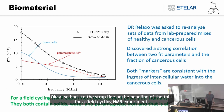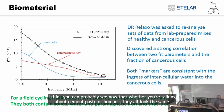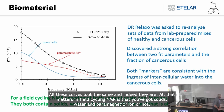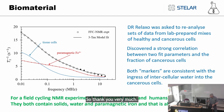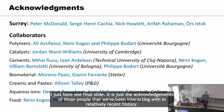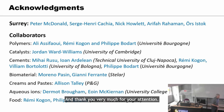Back to the headline of the talk. For a field cycling NMR experiment, you can probably see now that whether you're talking about cement paste or humans, they all look the same — all these curves look the same, and indeed they are. All that matters in field cycling NMR is that you've got solids, water, and paramagnetic iron or not. Thank you very much. Just one final slide with acknowledgements of the people we've been interacting with in relatively recent history. Thank you very much for your attention.